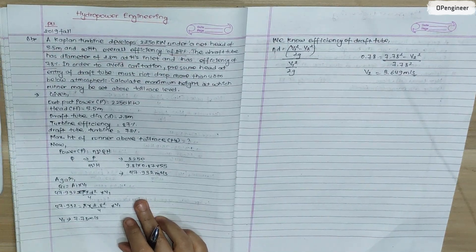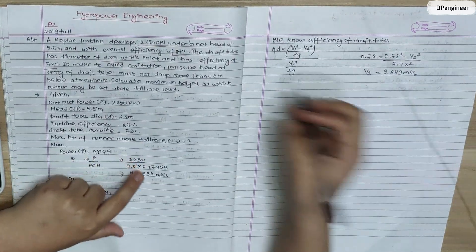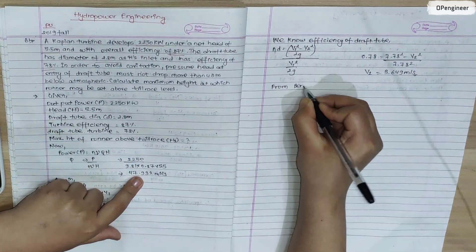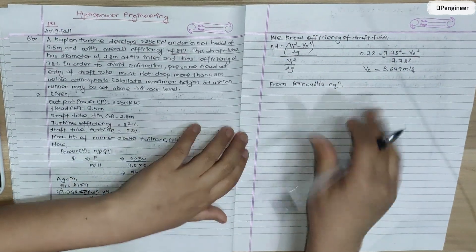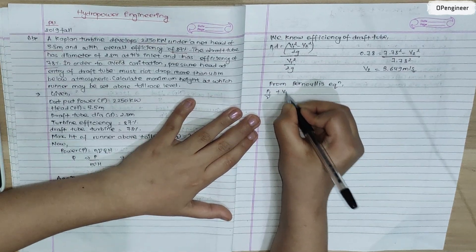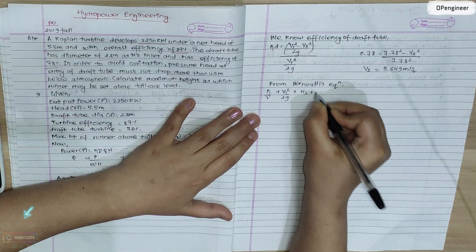From Bernoulli's equation: P1/γ + V1²/2g + Y = P2/γ + V2²/2g + Yf.